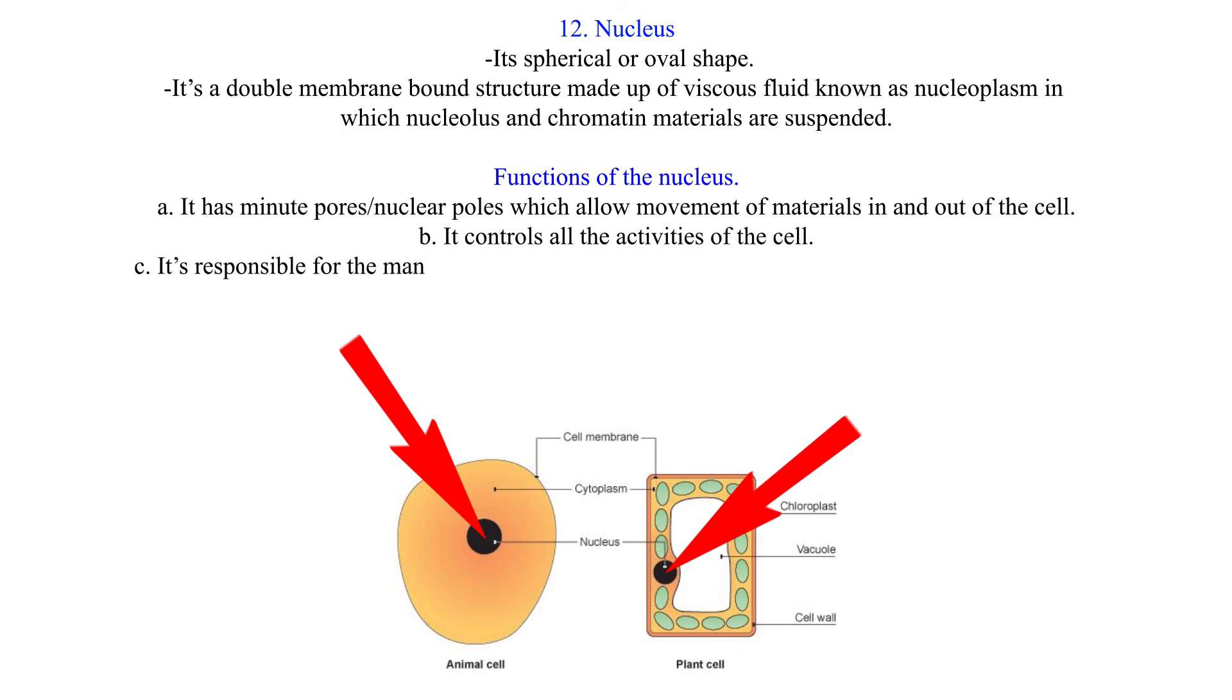C. It's responsible for the manufacture of ribosomes while chromatin contains hereditary materials. N.B. The nucleolus are small bodies often seen within the nucleus.